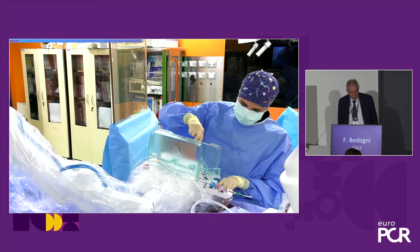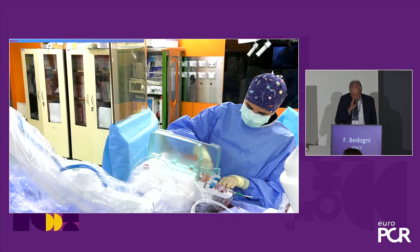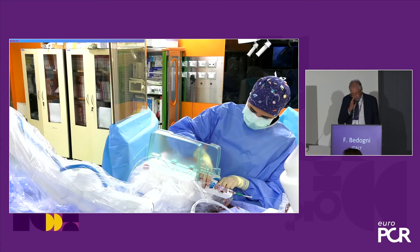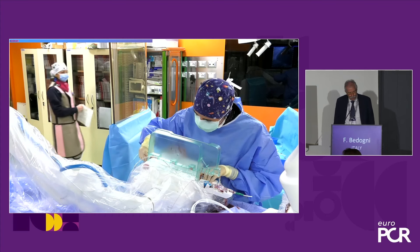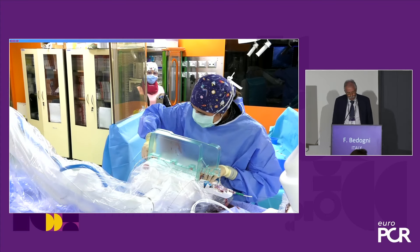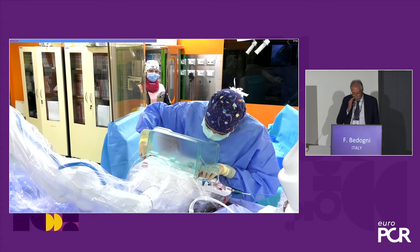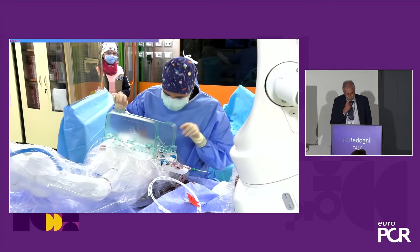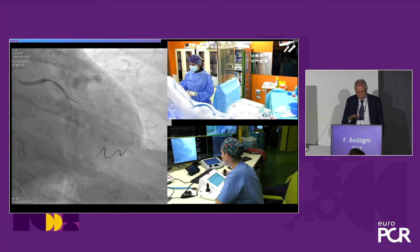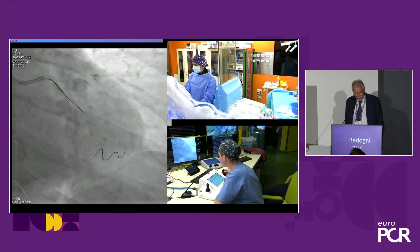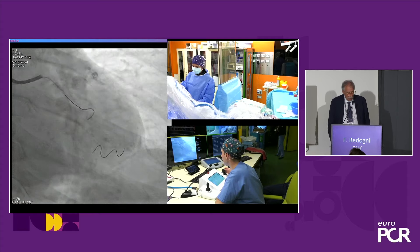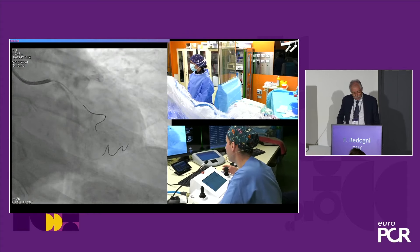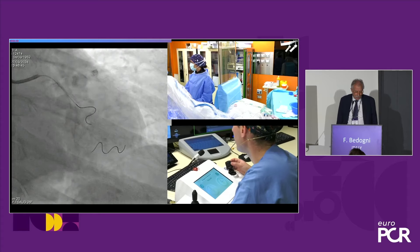Alice is the fellow inside the cath lab. We changed the path — putting the FFR wire in the side path and inserting the second wire in the working path to navigate into the marginal branch. Mattia is outside, and he moved the second wire. It's quite easy to go with a Sion Blue wire to protect the secondary vessel.